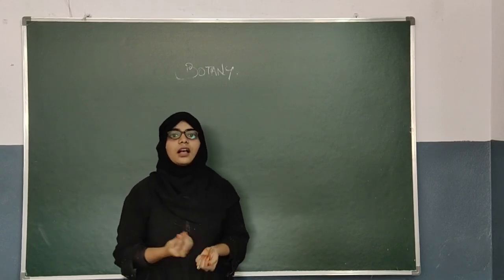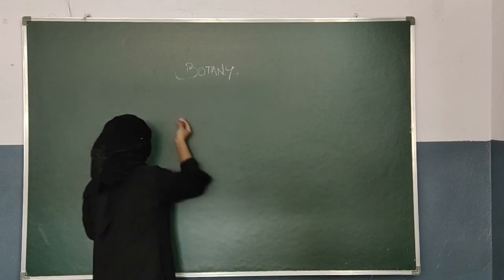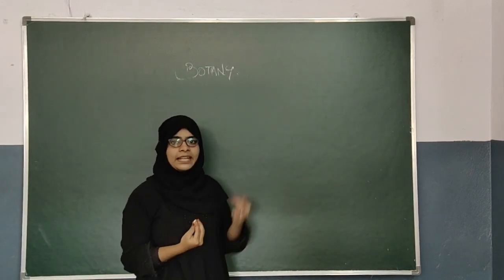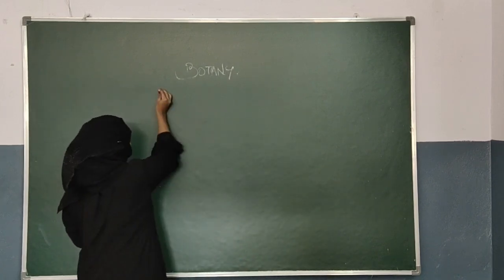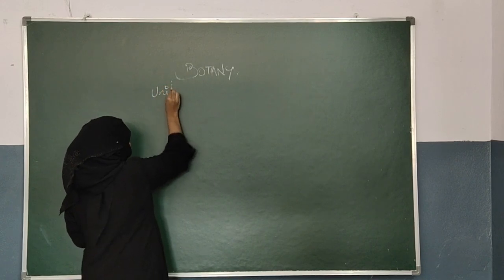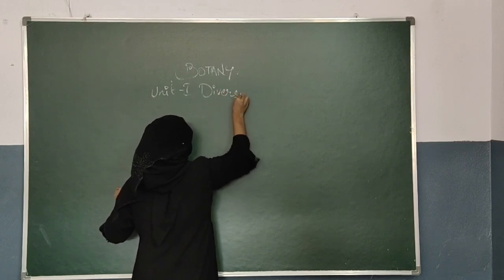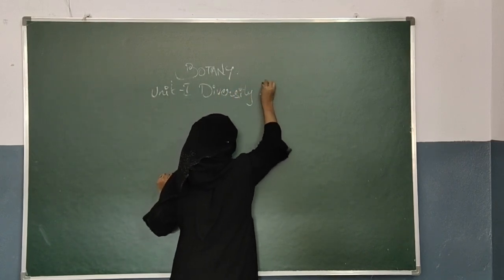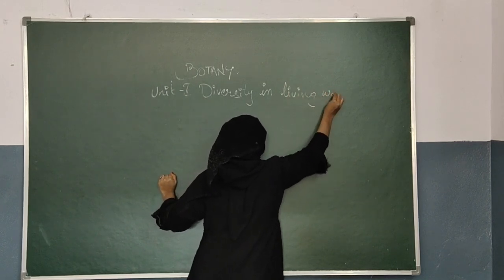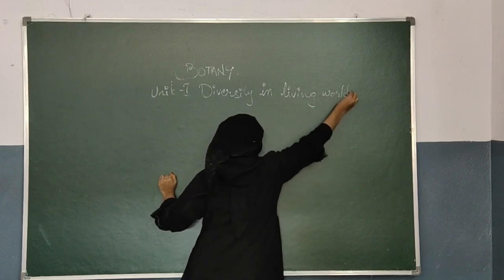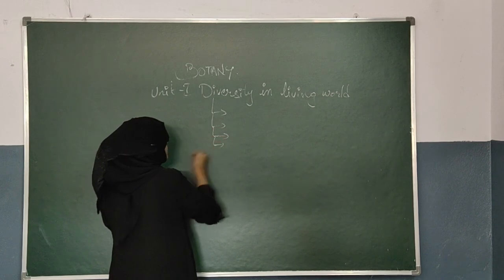In first year, your subject consists of seven units, and each unit consists of chapters — complete seven units consist of 13 chapters in subunits. The first unit is Diversity in the Living World, which further has four sub-chapters.